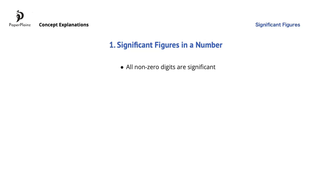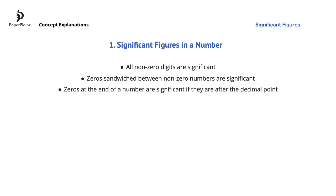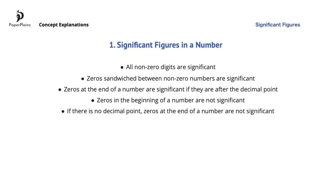Here they are. All nonzero digits are significant. Zeros sandwiched between nonzero numbers are significant. Zeros at the end of a number are significant if they are after the decimal point. Zeros in the beginning of a number are not significant. And if there is no decimal point, zeros at the end of a number are not significant.